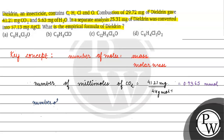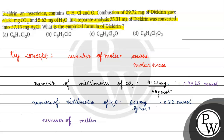Number of millimoles of water will be 5.63 mg divided by 18 g/mol, which is 0.312 millimoles. Number of millimoles of hydrogen will be twice the moles of water, because in one water molecule we have two hydrogen atoms. So millimoles of hydrogen = 0.624.